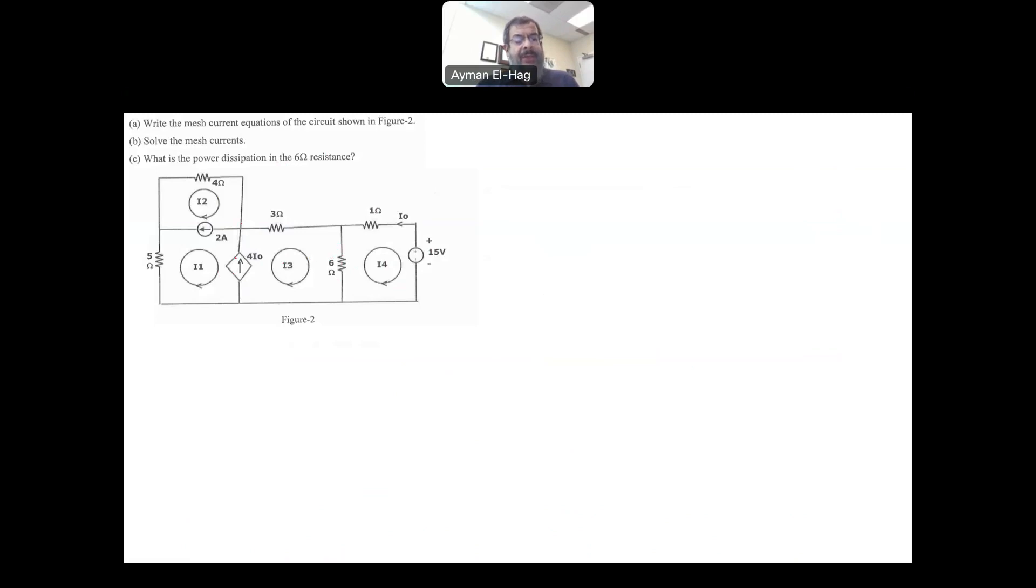Let's go back to our question. We want to first write down the mesh equations, solve them, and then find the power dissipation in the 6 ohm resistance. So let's start. We have four currents and four meshes. We can see there is a current source between I1 and I2, so I cannot apply KVL to loop or mesh 1 or mesh 2. However, I can utilize this information to relate the two mesh currents with the current supply between them. 2A is going in this direction. I1 is going clockwise in this direction, and I2 is going clockwise in that direction. However, I2 is in the direction of 2A, I1 is opposing it. So we can say that I2 minus I1 is equal to the resulting current between them, which is 2A. This is my first equation.